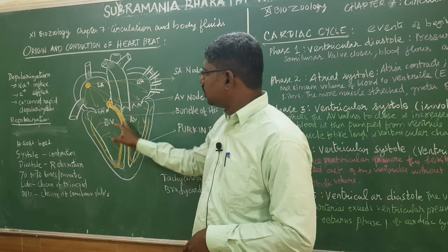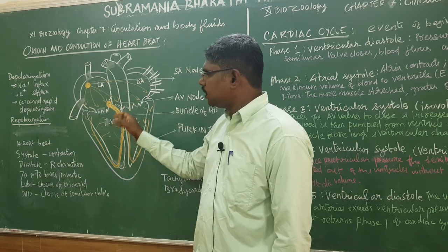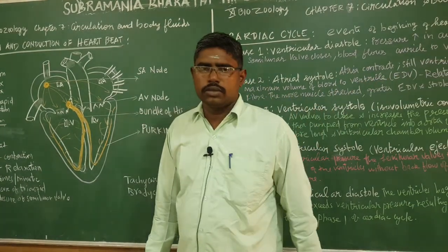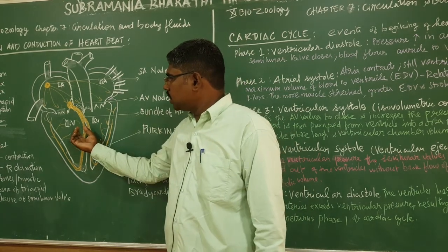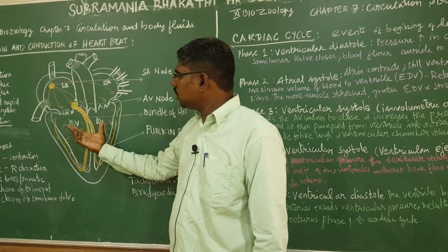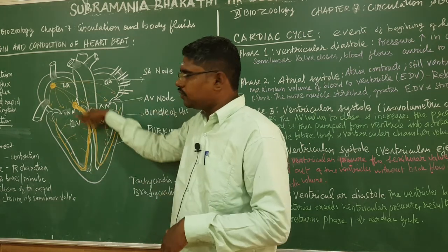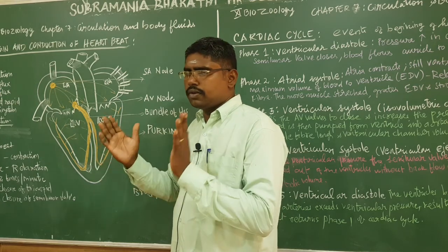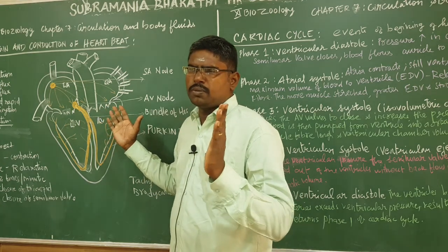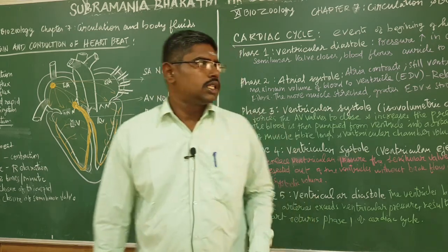We are going to have auricular systole. At that time, the ventricle fills out. You can fill blood into the ventricle from the lungs. All the muscles contract to push blood — this is atrial systole.